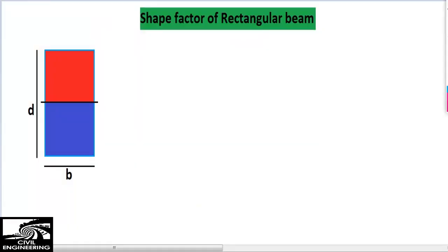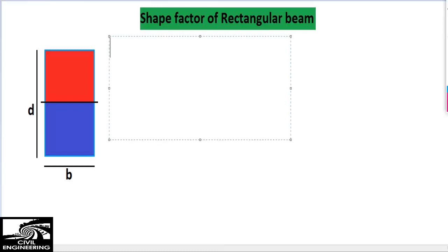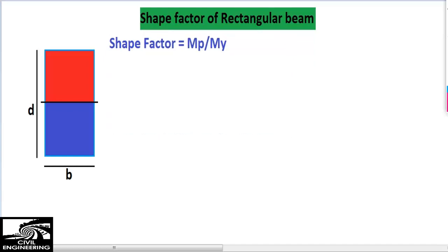Hi guys, today in this lecture we will talk about the shape factor, and especially we are interested to find the shape factor of a rectangular section. The formula for the shape factor is the plastic moment capacity of the section divided by the yield moment capacity of any section. This is the formula for calculating the shape factor of any section.